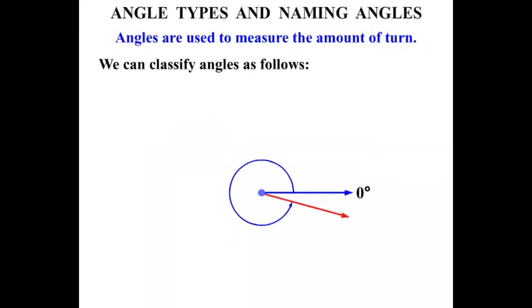Towards the end, if we get right around the circle, we've done 360 degrees — a revolution. So a full circle is 360 degrees.